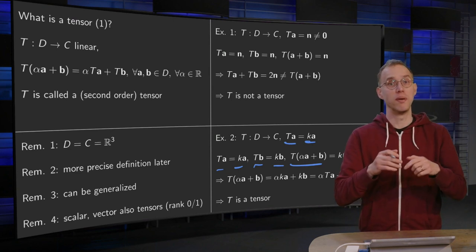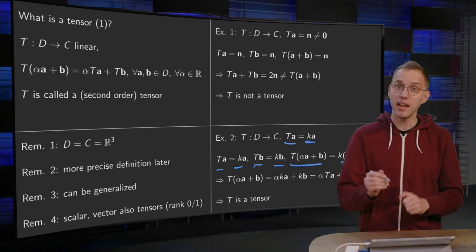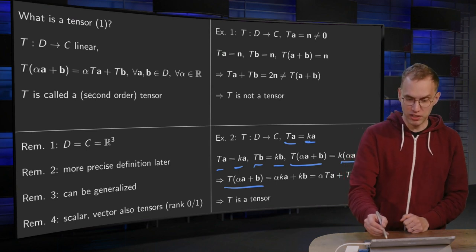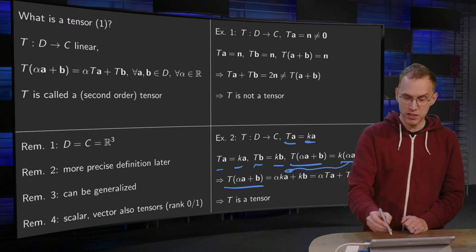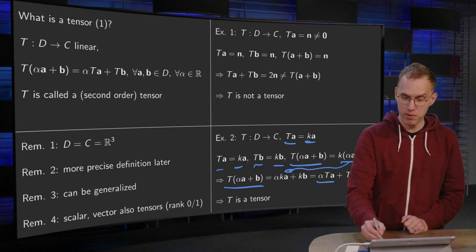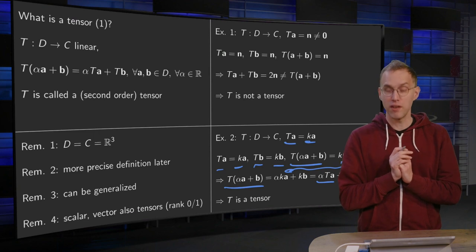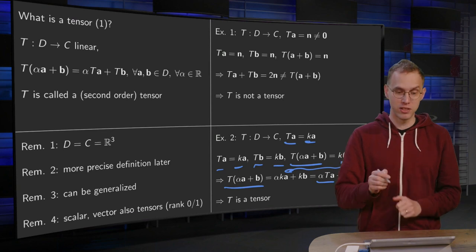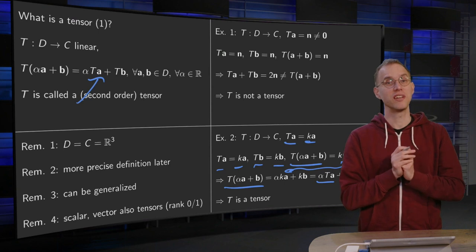And then we know that T of the alpha A plus B, we can rewrite this of course to alpha times k of A plus k times B. And then we see this is exactly equal to alpha times T of A plus T of B. So T of alpha A plus B equals alpha times T of A plus T of B for all scalar alpha and all A and B in the domain. So satisfying the definition. So this T is in fact a tensor.